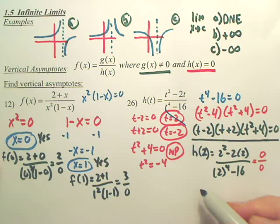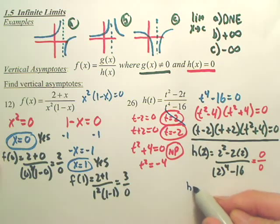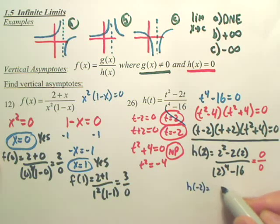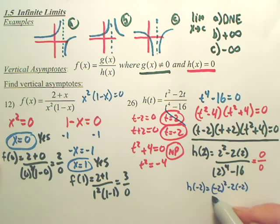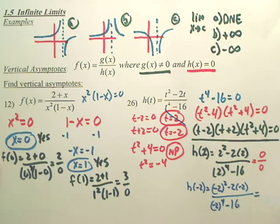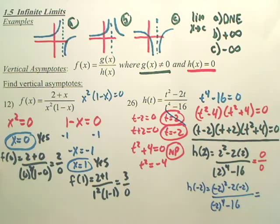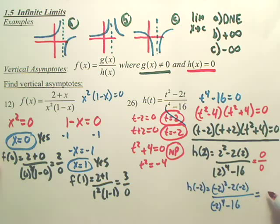And then, if we do h of negative two, we get negative two squared minus two times negative two over negative two to the fourth minus sixteen. That gives us, actually, eight over zero. So, are we okay?